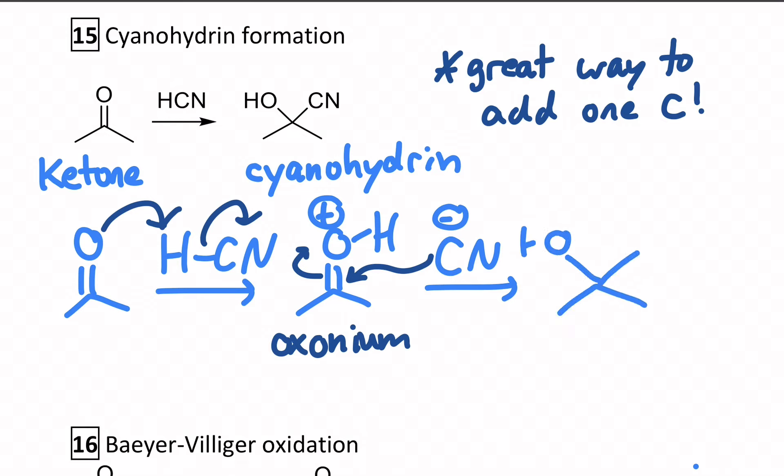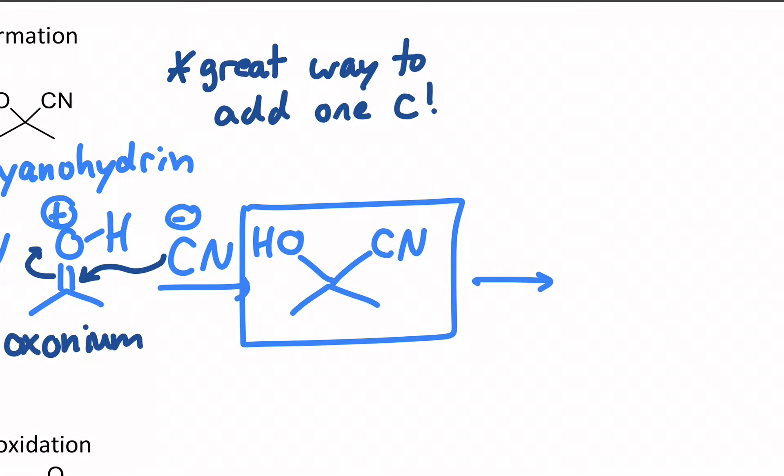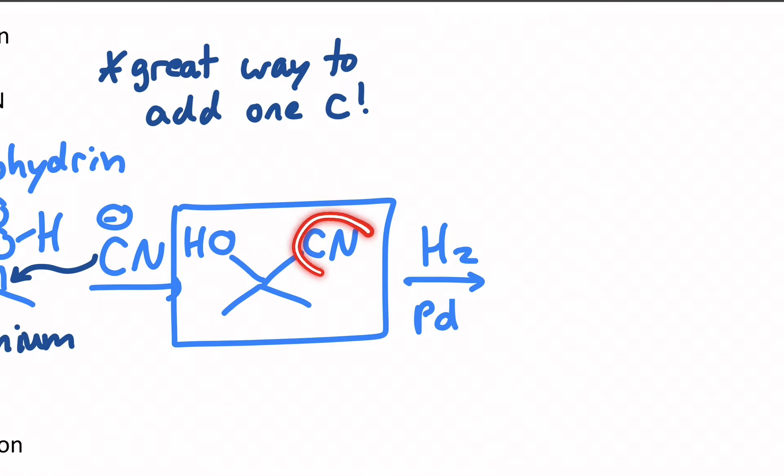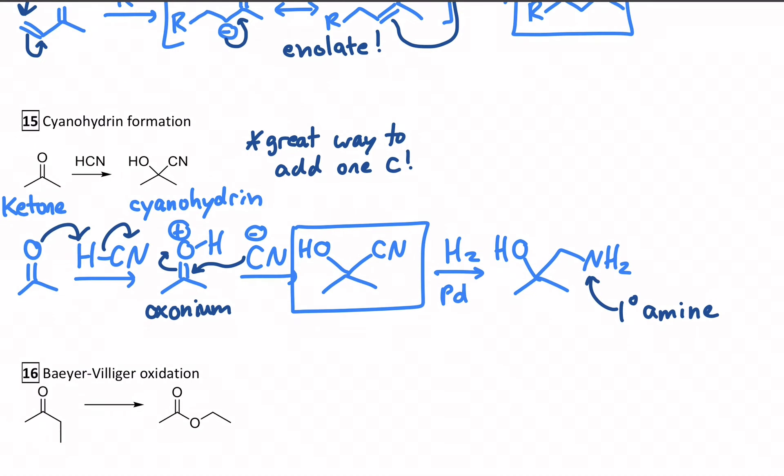One thing that's useful for cyanohydrins, I'll just show it here since there's so much space, is you can reduce a cyanohydrin with hydrogenation - H2 and a metal catalyst will reduce the carbon-carbon triple bond down to a single bond. And this is one way that's rather useful to make primary amines. We actually don't know much amine chemistry but it's coming up pretty quickly, so we'll just throw that in there as a useful way to make a primary amine and extend your original ketone.